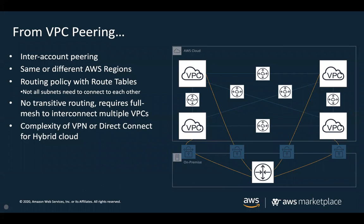VPC peering is one of the initial ways AWS provided to interconnect VPCs, supporting connections across multiple accounts and across regions. However, it does not support transitive routing — if you have VPC A peered to VPC B and VPC B peered to VPC C, A and C still cannot talk to each other. This requires a full mesh of point-to-point connections, and the complexity grows as accounts and VPCs increase. For hybrid cloud environments, you need site-to-site VPN connections from on-premises data centers to each VPC, or multiple private virtual interfaces over AWS Direct Connect.